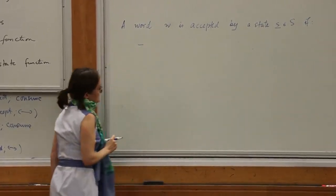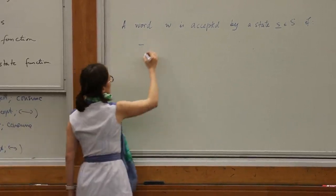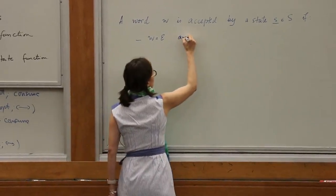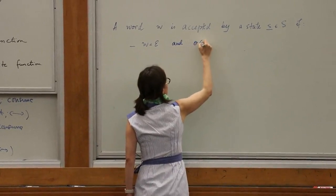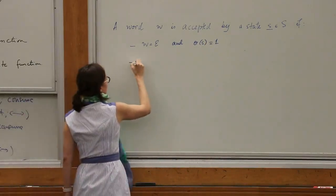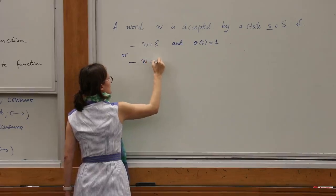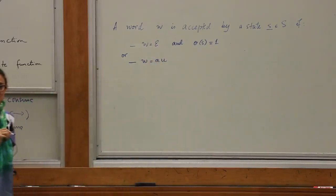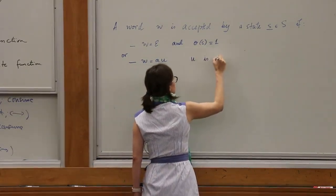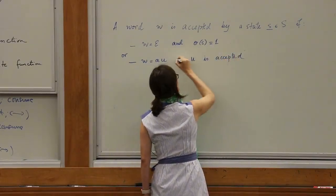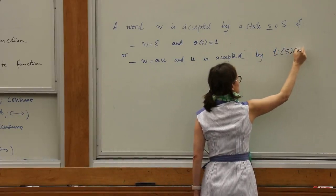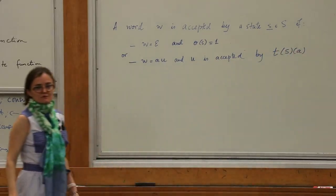A word is accepted by a state if one of two things is true: either the word is the empty word and the state is final, or the word has a letter A followed by some other word U, and then U is accepted by the state that you reach by reading A from S.